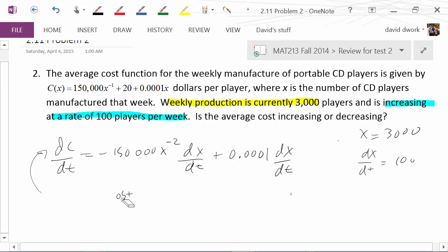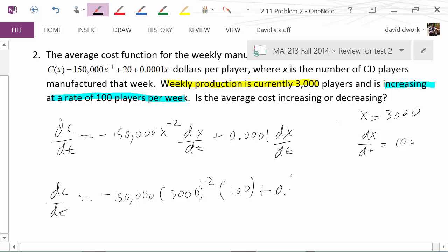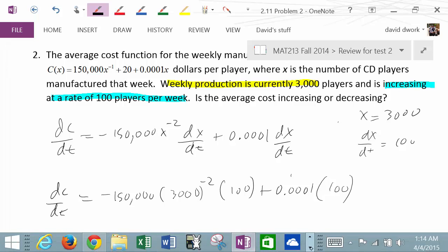So here we go. dc/dt is going to stay because that's what the question is asking about. -150,000, x was 3,000 raised to the negative 2, and then dx/dt was 100, plus 0.0001 and then times 100. And so now you're going to pop that in your calculator.